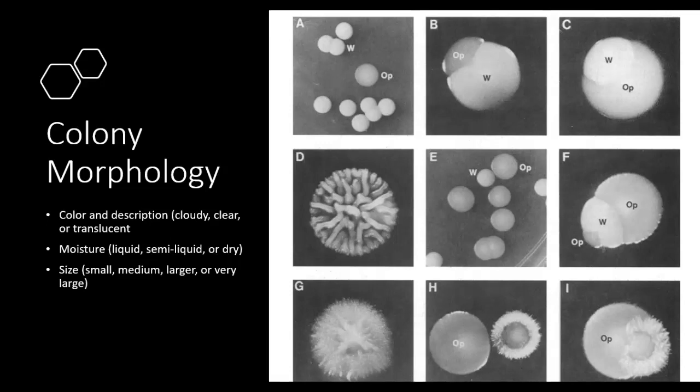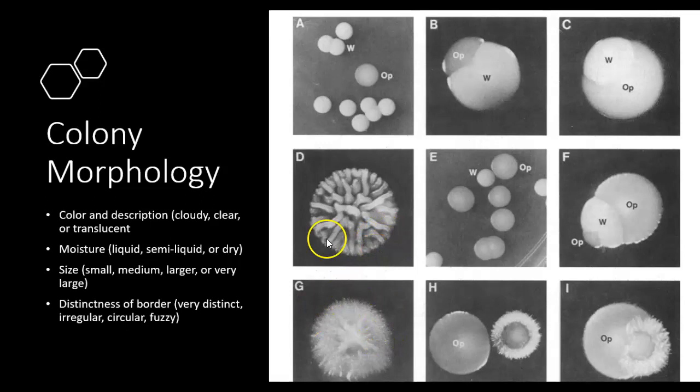Pay attention to the color — most colonies are usually white, but sometimes they're green or pink, so write that down. Note whether it is cloudy, clear, or transparent. Pay attention to the moisture level — some colonies are very dry, some appear very moist, and some have an in-between consistency. Size is also important — some colonies are very large and some are very small. Pay attention to the border: some have a very smooth border and some have a fuzzy border. Record the number of colonies you see on your petri dish. Take notes and take pictures.